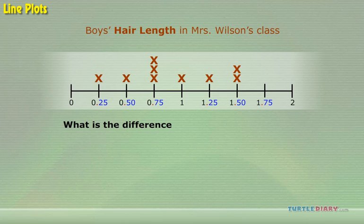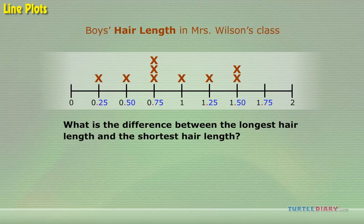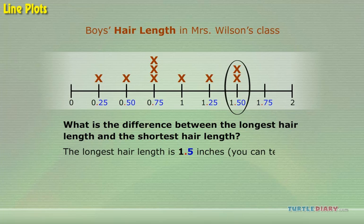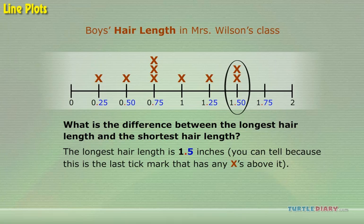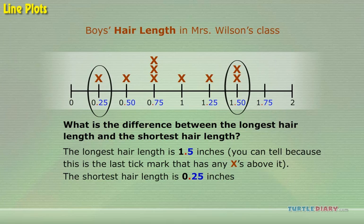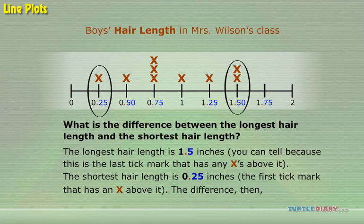What is the difference between the longest hair length and the shortest hair length? The longest hair length is 1.5 inches. You can tell because this is the last tick mark that has any crosses above it. The shortest hair length is 0.25 inches, the first tick mark that has a cross above it. The difference, then, is 1.25 inches.